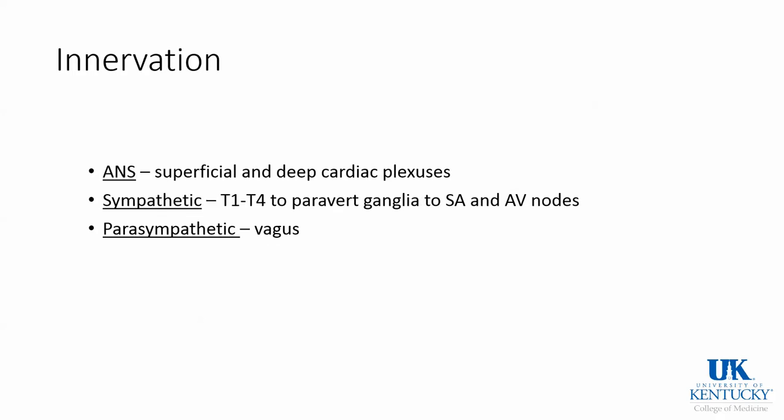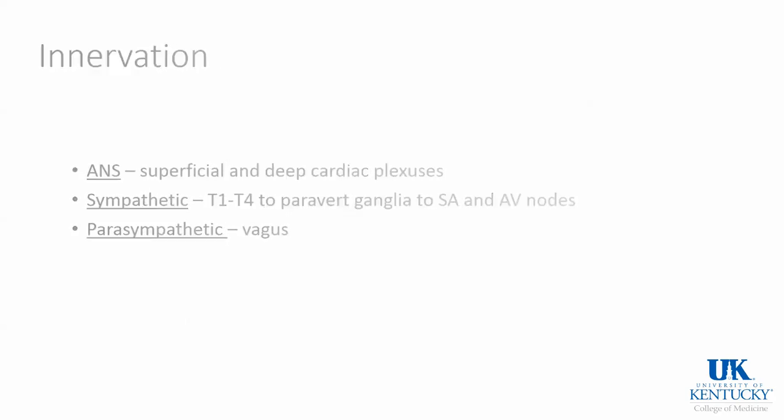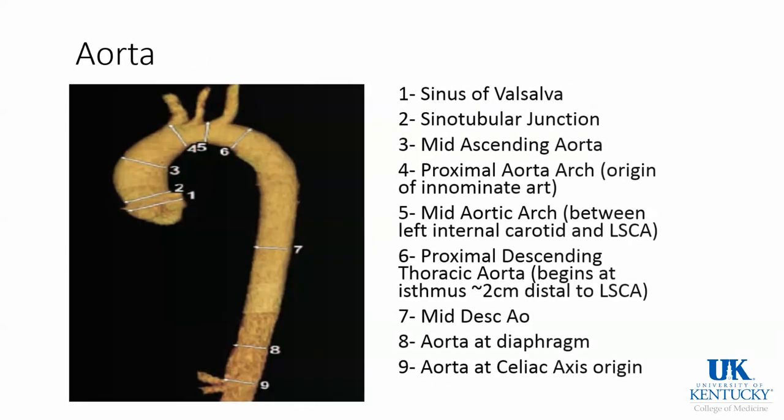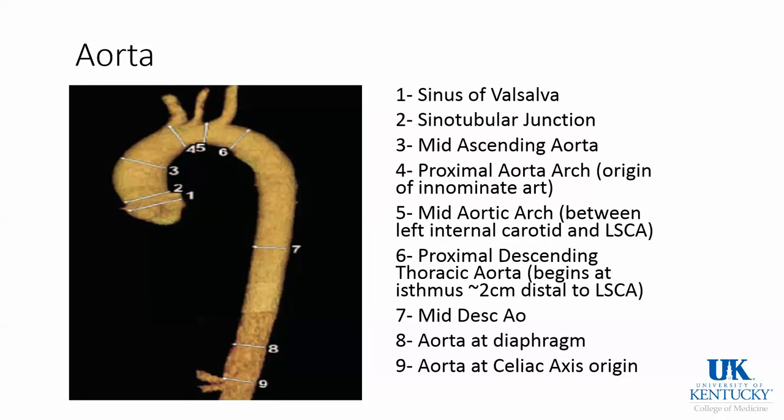Regarding innervation, there are superficial and deep cardiac plexuses. There's also a sympathetic and parasympathetic nervous system that innervates the heart. Moving on from the heart, blood leaves and goes to the aorta.